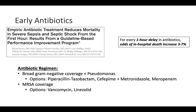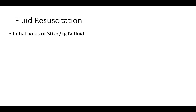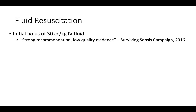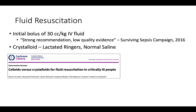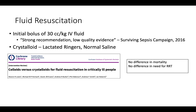For fluid resuscitation, patients with sepsis or septic shock should receive a bolus of 30 cc per kilogram of intravenous fluid for initial volume resuscitation. Fluid resuscitation in sepsis and septic shock is currently under further investigation with numerous ongoing RCTs. At this time, guidelines continue to recommend an initial 30 cc per kilogram bolus within the first three hours of management — a strong recommendation with low-quality evidence from the Surviving Sepsis Campaign 2016. Should the patient receive crystalloid (lactated Ringer's or normal saline) or colloid (albumin or starches)? The answer is crystalloid: a 2018 Cochrane review found no difference in outcomes between crystalloid and colloid, with crystalloids being cheaper and more readily available.